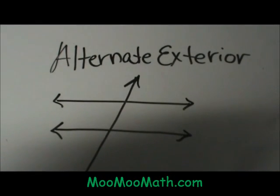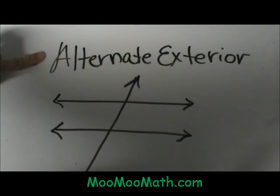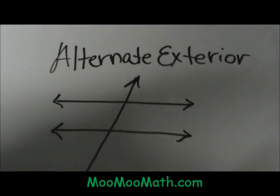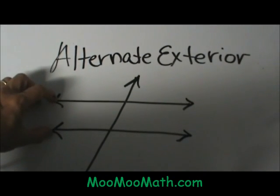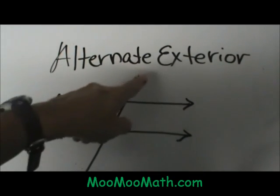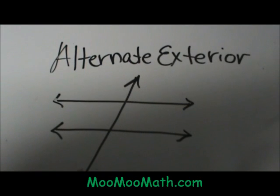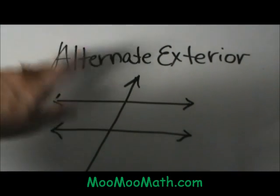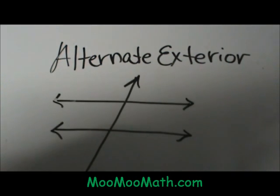Hi, welcome to Moo Moo Math. Today we're going to look at alternate exterior angles. When do we have alternate exterior angles? We have them when we have two lines and what we call a transversal. The transversal crosses both of those lines. Sometimes these two lines are parallel and sometimes they aren't.